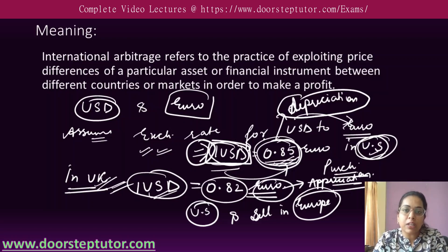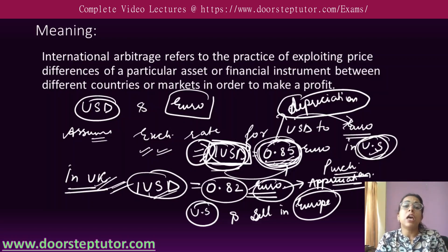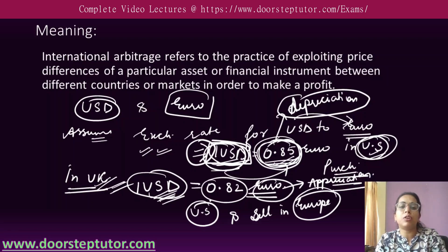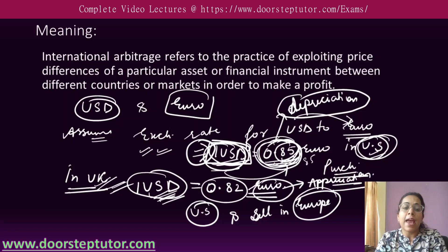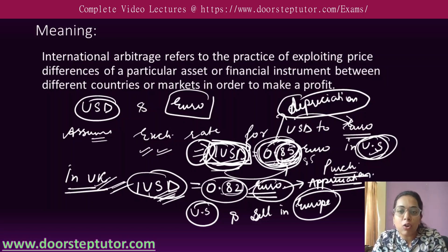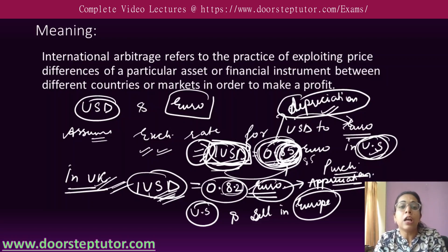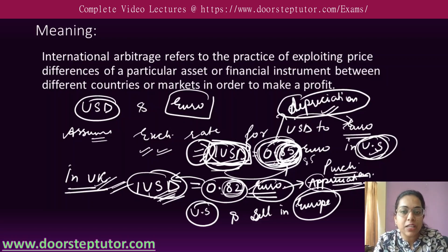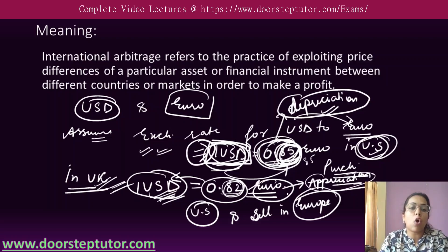The appreciation means that with one unit of dollar you are getting 0.85 euros — that is 85 euros — but with the same dollar you are getting only 82 euros in Europe. There the value of your currency is less, which is why it is called depreciation of currency. But where you pay less and get the same quantity, that is appreciation — the value of your currency is higher.